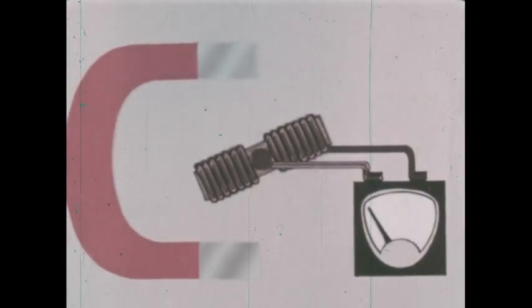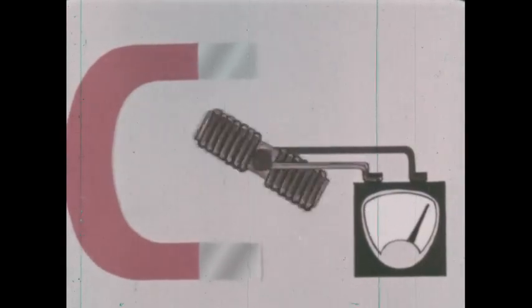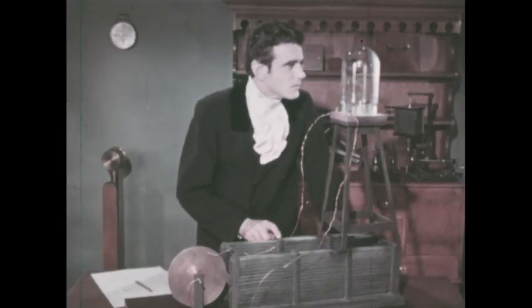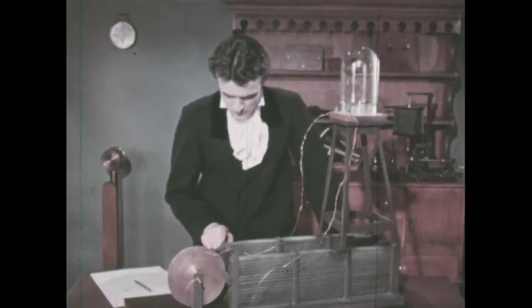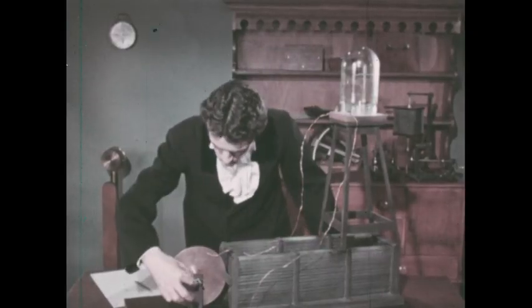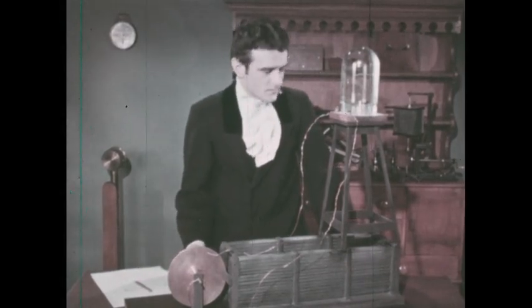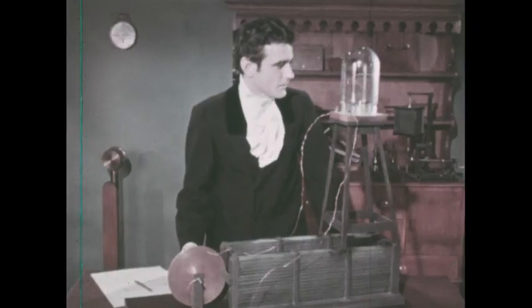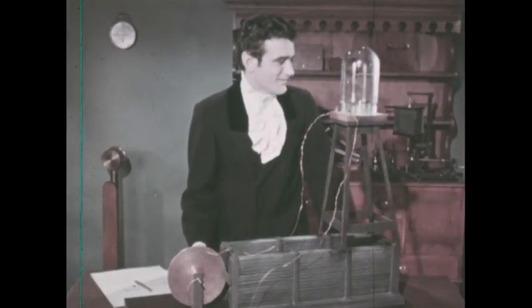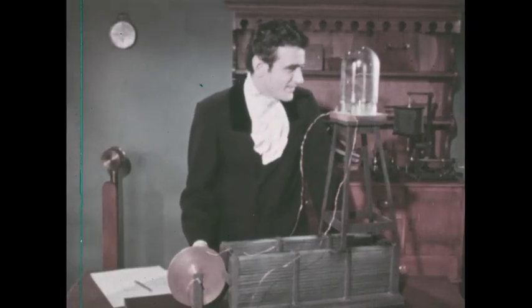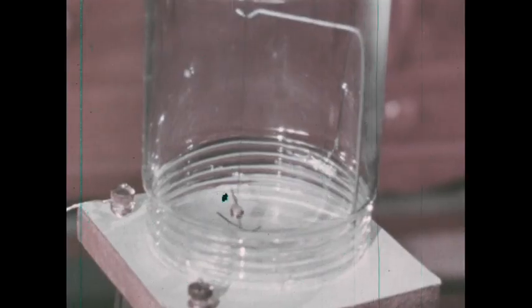When a coil cuts across magnetic lines of force, an electric current is generated. Faraday built the world's first magnetic generator of electricity. It consisted of a twelve-inch copper disc mounted so that it could be turned by a crank. As it turned, its outer edge passed between the poles of a large magnet. An electric current was produced.